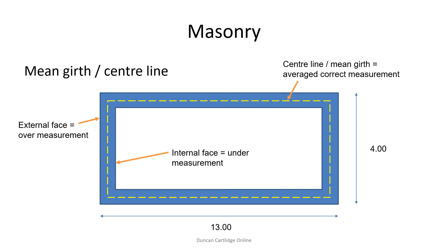This slide shows the logic behind the use of mean girths or centrelines. Calculate the length using the external face and you over-measure. If you calculate the length using the inside face, you under-measure. Therefore, use the average of the two, or centreline girth, shown here in yellow.